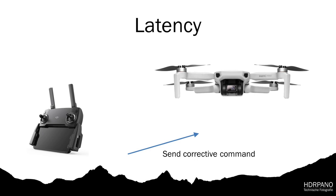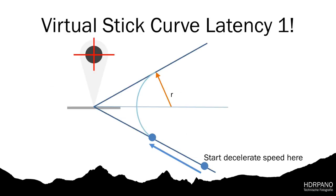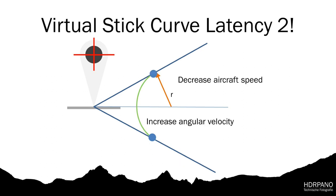What can we do to avoid this? I have two methods. First, I decelerate before I reach entry point S to start the curve, decelerating to the calculated curve speed. Then I decrease aircraft speed and increase angular velocity. With these two methods we can compensate for latency.